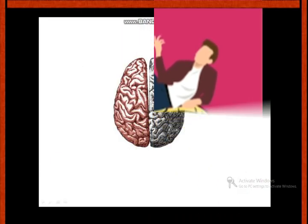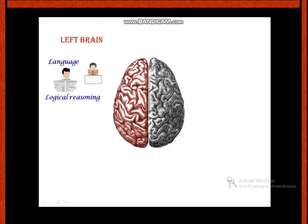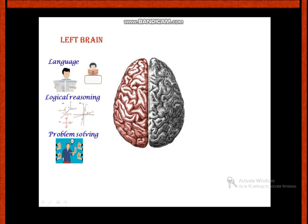The left side brain handles language — how we speak, read books or newspapers, and store that information. It also handles logical reasoning, problem solving skills, and decision making skills. We use the left side brain for all of these.